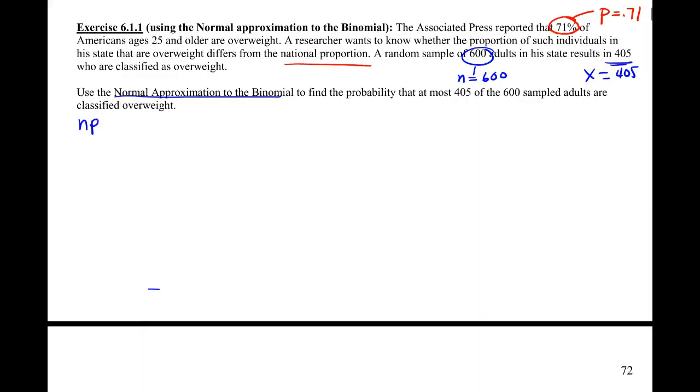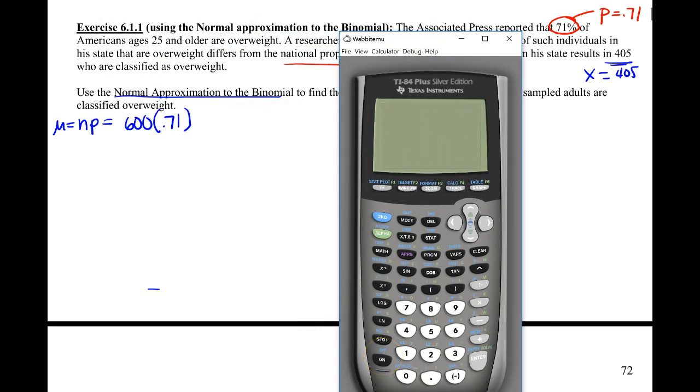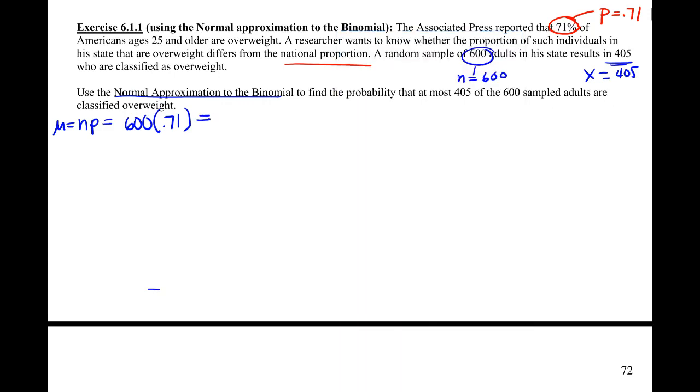Which is my 600 times that 0.71. So we'd expect about 71% of the 600 to be classified as overweight if they're similar to the national average, right? So we'd figure out that that's 426 is what we would expect.